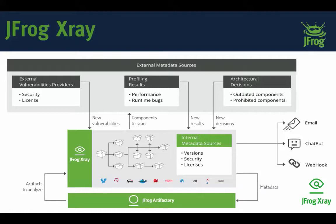X-Ray also handles licensing. It scans all open source licenses and allows you to block or permit certain licenses so your environment remains license-compliant. It can generate reports on what licenses you're using and what compliance policies you're adhering to. At the end, it gives you options to trigger alerts via email, chatbot, webhook, or by submitting information to your CI servers so they can decide whether to allow the artifact through.